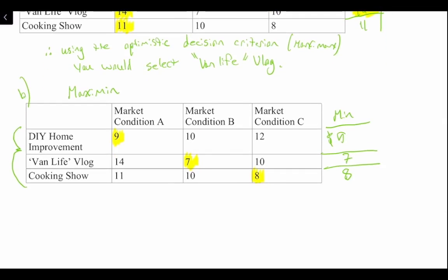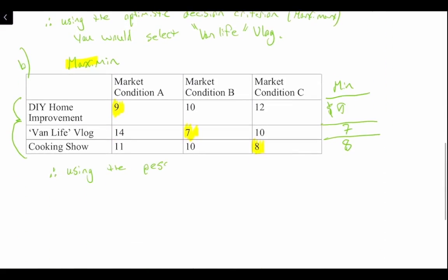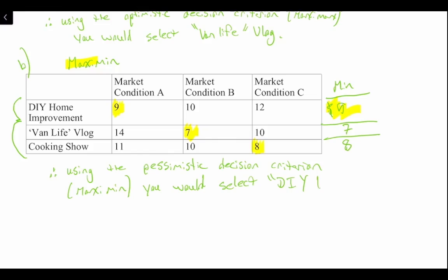We found the minimums, and now we need to find the maxi-min — the maximum of the minimums. The maximum of the minimums is 9 million. Therefore, using the pessimistic decision criterion — the maxi-min — you would select the DIY home improvement series.